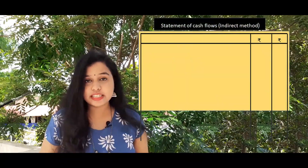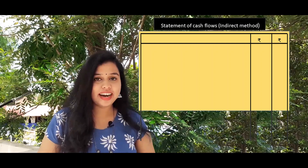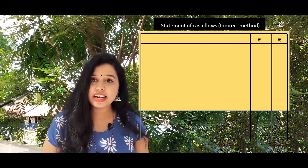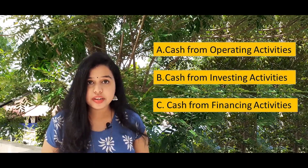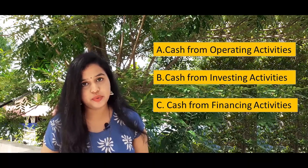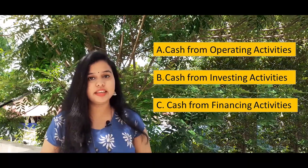This is the format that we have done. If we have an easy trick, we have a heading — Statement of Cash Flow, indirect method. This is the amount column. Cash from operating activities, cash from investing activities, and cash from financing activities. These are the three categories: operating activities, investment activities, and financing activities.